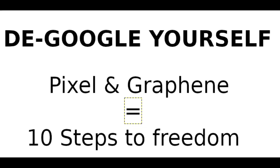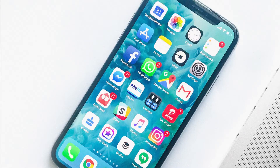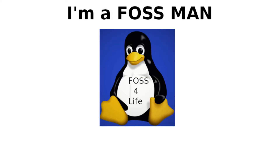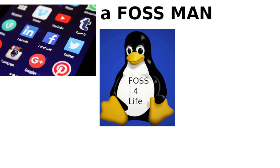If you followed my video on installing GrapheneOS on your phone, now that you have a privacy-respecting OS installed, you don't want to just start installing the same applications like the regular Facebook app, Instagram app, Gmail app, or whatever you might use to consume media. If we install these types of applications back onto our phone, we might have circumvented Google from collecting data from us, but the applications we install on our phone still can.